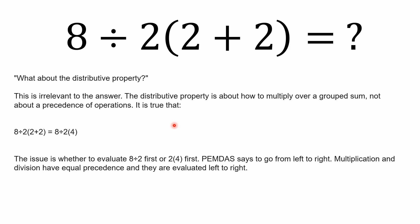The distributive property is irrelevant to this answer. The distributive property is about how to multiply over a group sum, not about a precedence of operations. So regardless of whether you're somebody who's going to come here in the comments and argue for or against implicit multiplication, it's true, no matter how you look at it, if you've got 8 divided by 2 times the quantity 2 plus 2, everybody agrees that the first thing you take care of is what is inside of these parentheses. So that leaves you with 8 divided by 2 times 4, right? The issue is not about the distributive property.